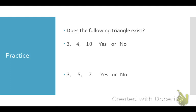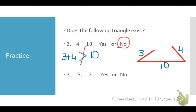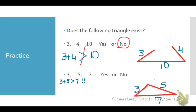So do these triangles exist? With side lengths of 10, 3, and 4, I add up the two smaller sides: 3 plus 4 equals 7, which is not greater than 10, so no. With sides 3, 5, and 7, the two smaller sides add up: 3 plus 5 equals 8, which is bigger than 7. So yes, this triangle could exist.